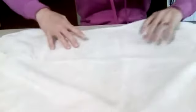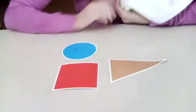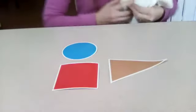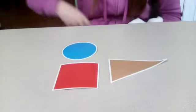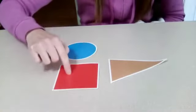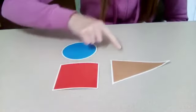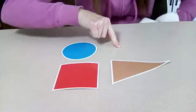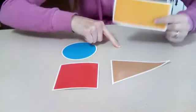Abracadabra, abracadabra, abracadabra. What shape is missing? We have circle, square, triangle, and rectangle.